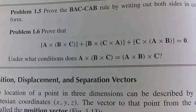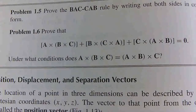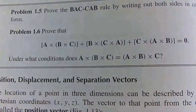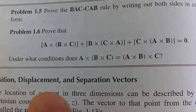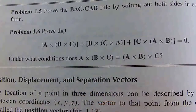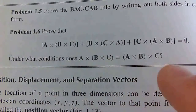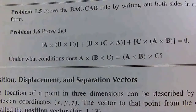Hello everyone, welcome back to the channel. Today we're going to be solving problem 1.6 from Griffith's Introduction to Electrodynamics. It asks us to prove that A cross (B cross C) plus B cross (C cross A) plus C cross (A cross B) equals the zero vector.